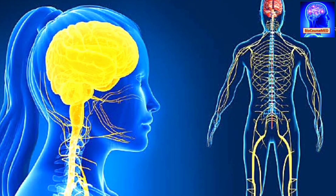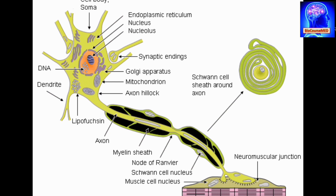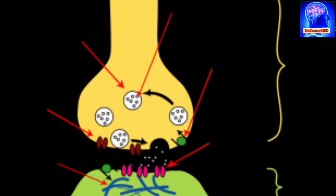Assalamu alaikum. Today we are going to study about the nervous system, its functions, and its divisions. The nervous system, by definition, is a network of nerve cells and fibers which transmit nerve impulses between the parts of the body.